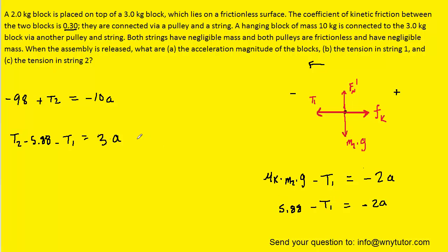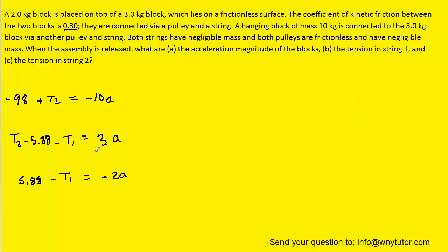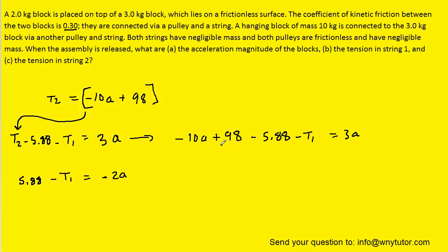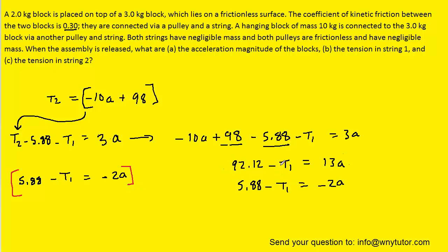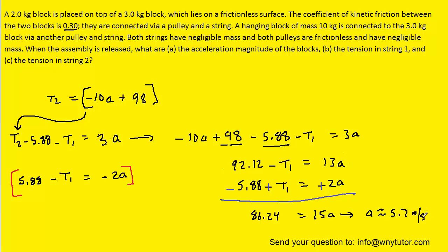We'll hold on to this equation alongside the other two we've developed. Now it becomes an algebra problem. We take the first equation and move the 98 to the right-hand side, then plug the expression for T2 into the second equation. We combine like terms and add the 10a to the right-hand side. We then stack this equation with the third, eliminate the T1 terms by changing signs and adding the two equations together, and finally divide both sides by 15. The acceleration is approximately 5.7 meters per second squared — that's the answer to part A.